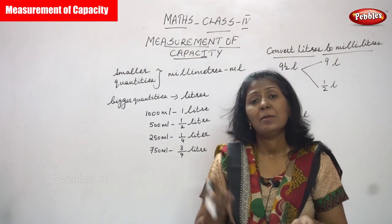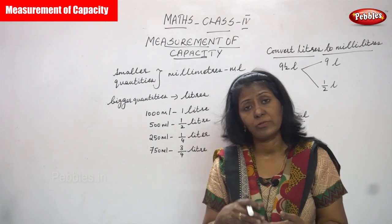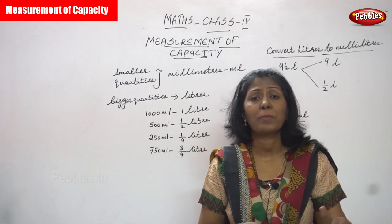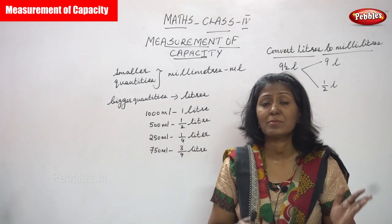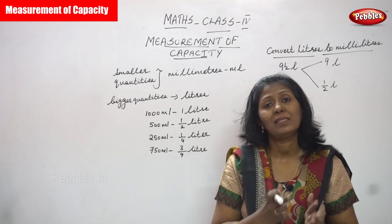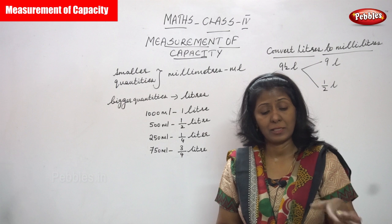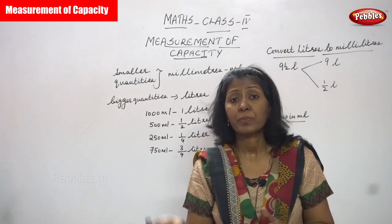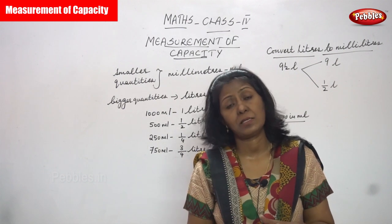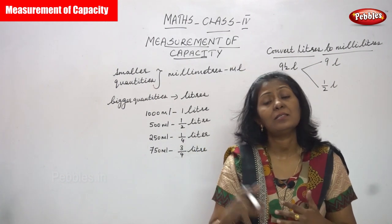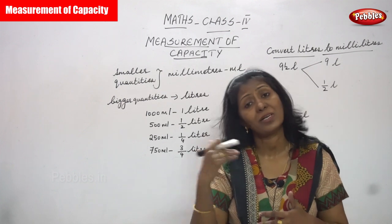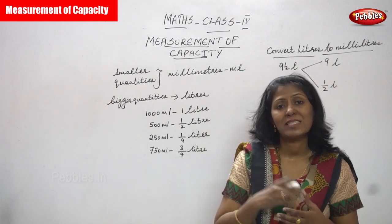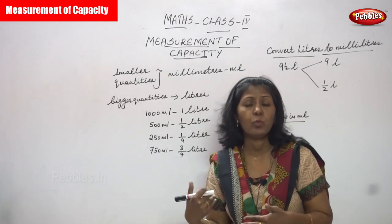Smaller quantities of liquid are measured in milliliters and bigger quantities are measured in liters. For example, one bucket full of water — the capacity of that bucket is five liters. So water, milk, oil, petrol, diesel — everything comes under liquids, and liquids come under measurement of capacity.